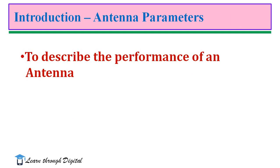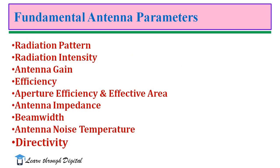There are some parameters used to describe the performance of an antenna: radiation pattern, radiation intensity, antenna gain efficiency, aperture efficiency and effective aperture, antenna impedance, beam width, antenna noise temperature, and directivity are some of the fundamental antenna parameters.